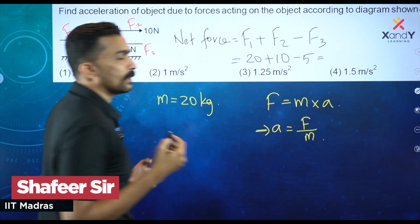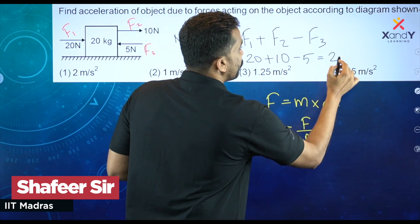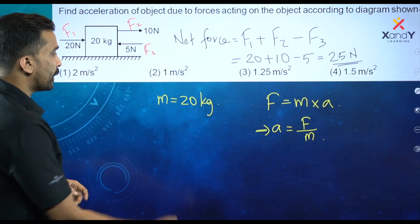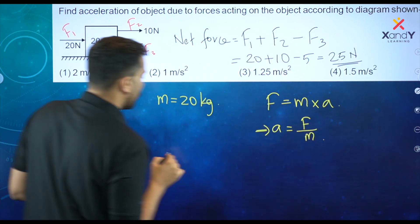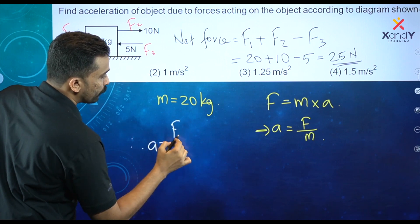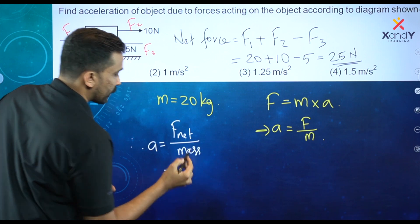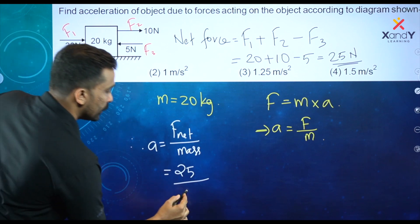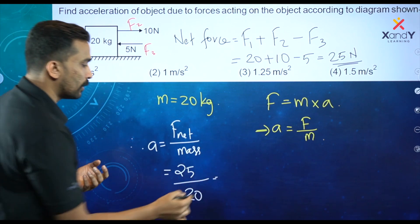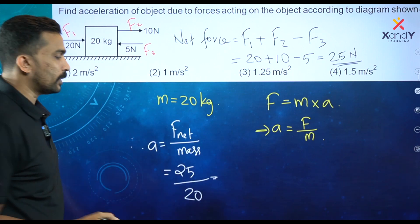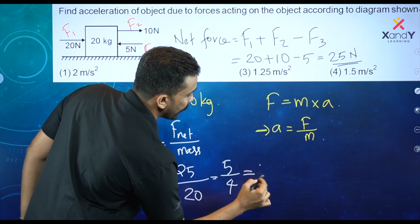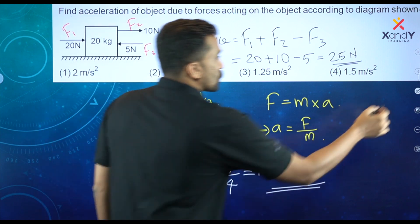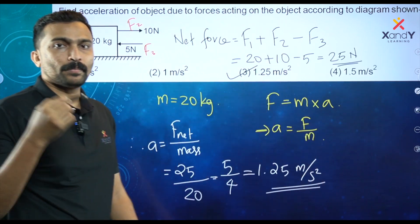So if we add: the total is 20 N plus 10 N, minus 5 N in the opposite direction. The net force is 25 N. Therefore, acceleration equals net force divided by mass. Net force is 25 N, mass of the object is 20 kg. 25 divided by 20 — dividing numerator and denominator by 5 — gives 5 by 4. Our answer is 1.25 metres per second squared. 1.25 m/s² is Option C — option number 3 is the correct answer.